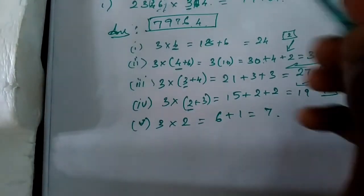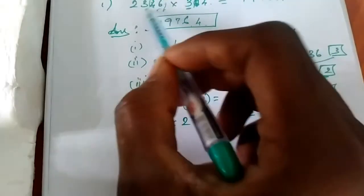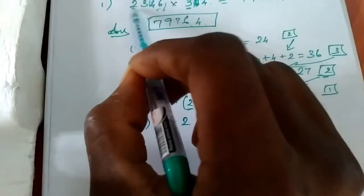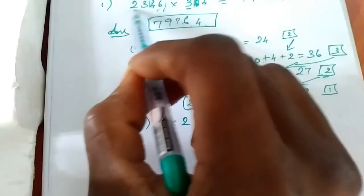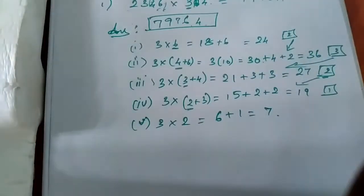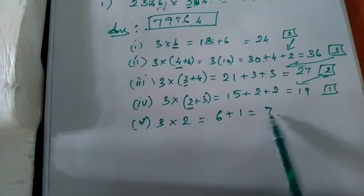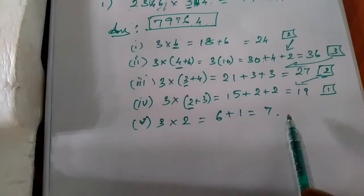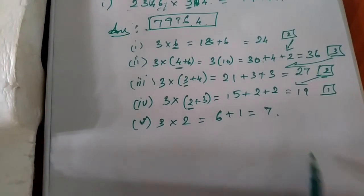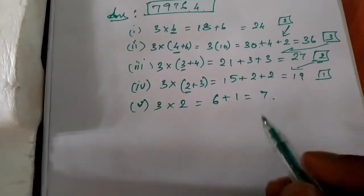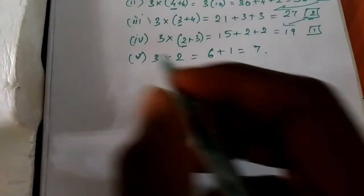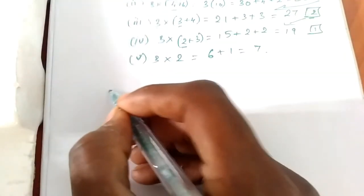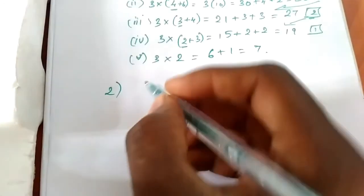The last number — the number finishing, the last number — because of the first number correct. Okay, answer correct.